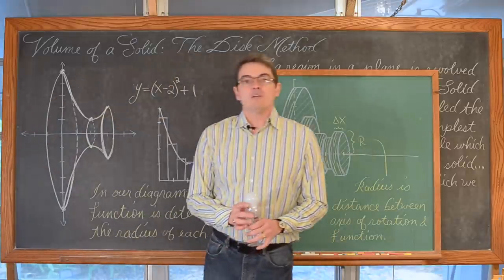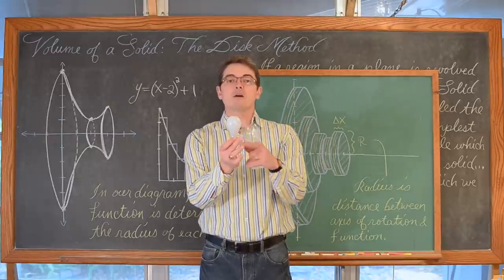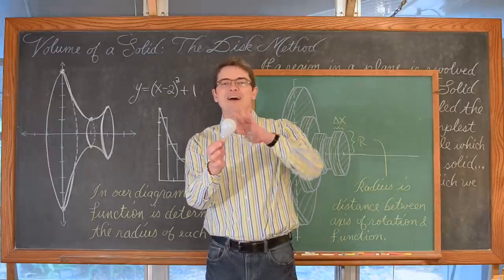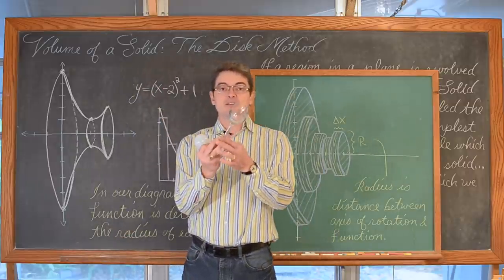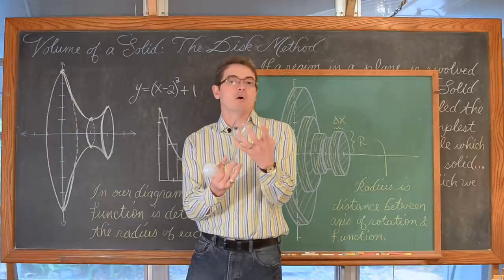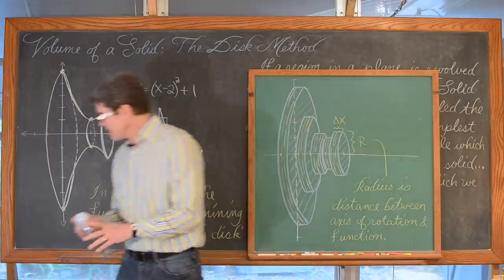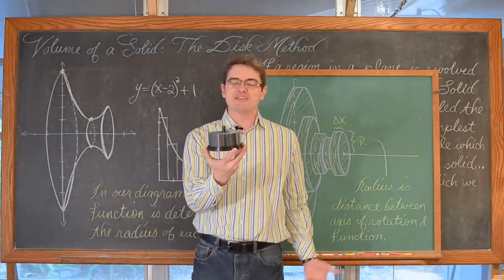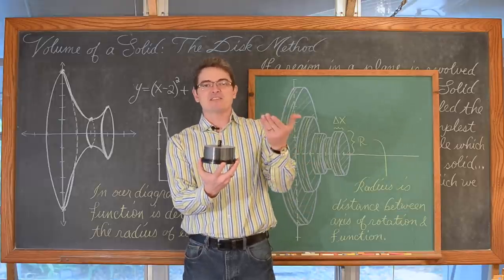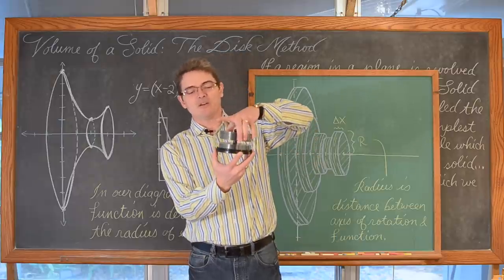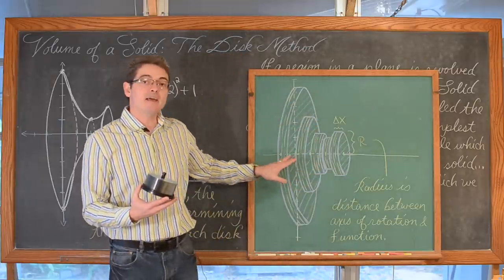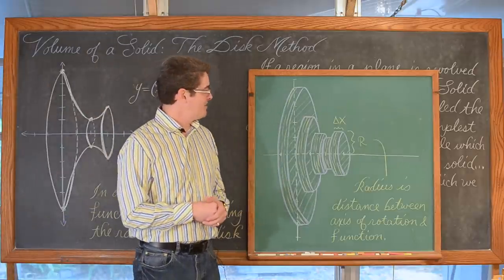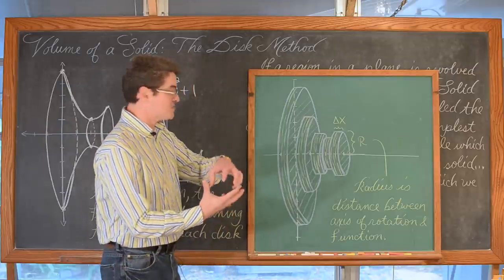That means we will be able to answer questions like: if I had a function describing the outside of this light bulb, how much volume does it have? How much volume does this glass hold? How much glass did it take to make this wine glass? This is kind of a boring example because this is just a stack of DVDs — it is a cylinder, and we can just do pi r squared times the height. But we could also find the volume of all these individual disks and add them up to get the volume of the larger cylinder they make up.